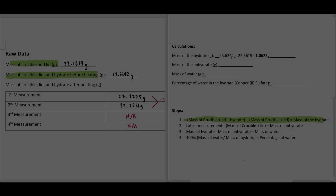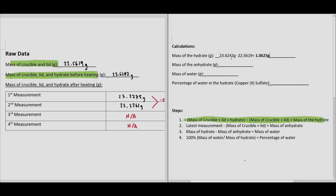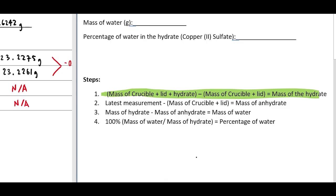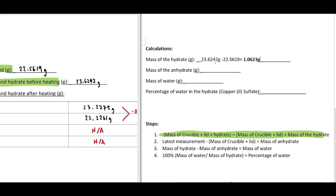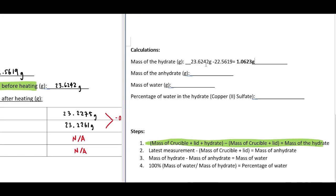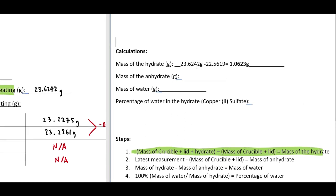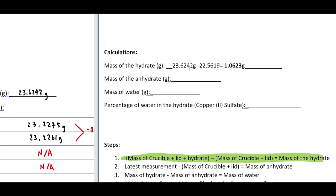For calculations, start by solving the mass of the hydrate. Subtract the mass of the crucible and its lid from the mass of the crucible lid and the hydrate. Or, if you have recorded the mass of the hydrate from the lab, you can skip this step.